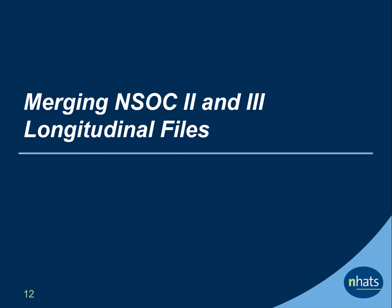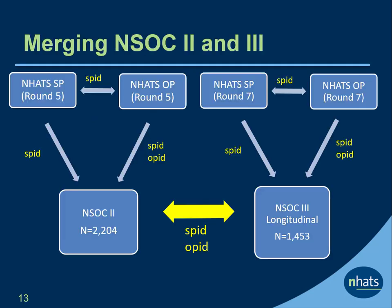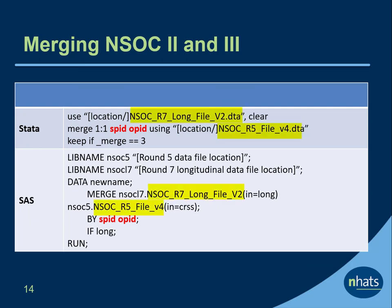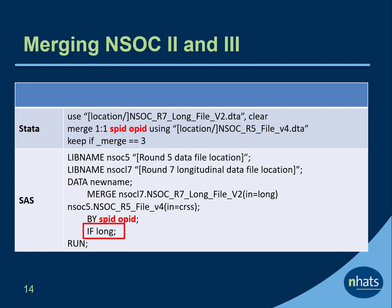Finally, let's look at how to merge longitudinal NSOC files. Here we illustrate with NSOC 2 and NSOC 3. In each round, you can merge the NHATS SP, NHATS OP, and NSOC files. You can also merge the NSOC 2 and NSOC 3 longitudinal file directly, using both SPID and OPID in a 1-to-1 merge. This slide shows the Stata and SAS code for this merge using both SPID and OPID. In Stata, it is a 1-to-1 merge. In this example, only cases in both rounds are retained. In Stata, this is designated with a keep statement where the merge is 3, and in SAS with indicating we are only keeping cases in the longitudinal file.